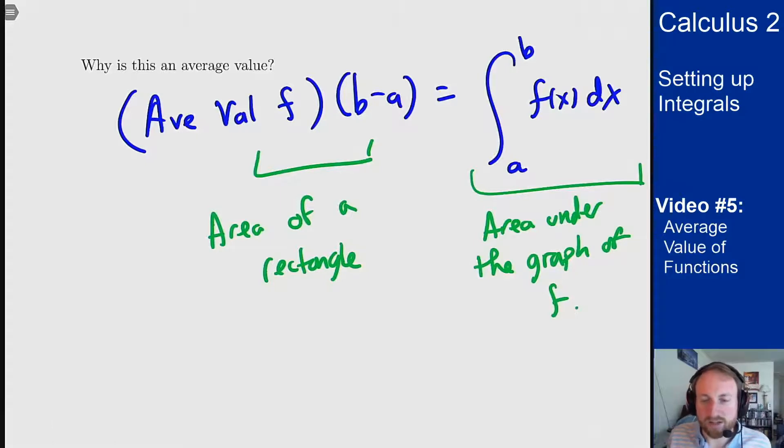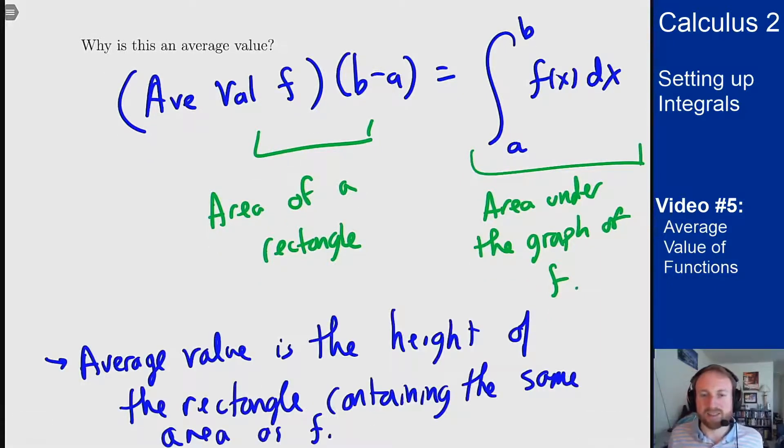So what the average value really does is it finds the height whose rectangle over the interval b minus a has the same area as the area under the function f on that same interval. So in some sense it's like the average height of the function f on this interval. It really wouldn't have a way to do it any other way, but this tells what the average height is in the sense of a rectangle of that height has the same area contained in it as the function f does on this domain.